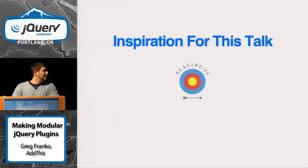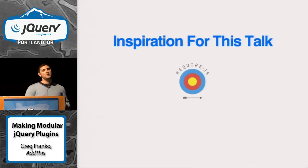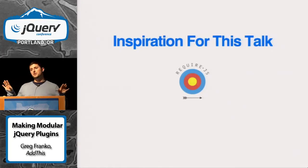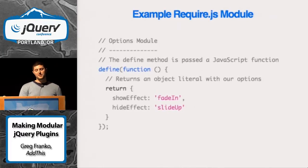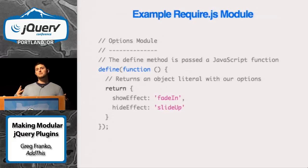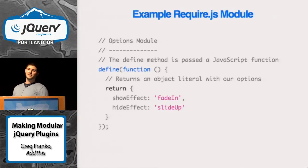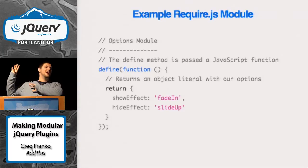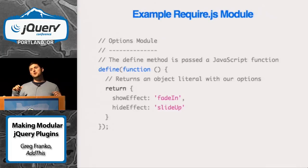RequireJS uses a global define method. Here's an example module — I'm defining a module without a name, with a callback function that returns an object literal. From a jQuery plugin perspective, this could be all of my default options in their own file. That's all it's doing — it's not doing any smart logic, just returning my default options.